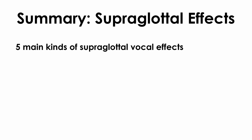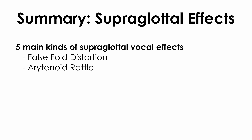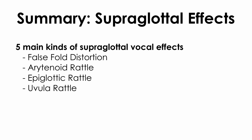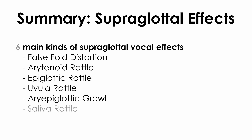Now let's summarize what we've talked about so far. We have five main kinds of supraglottal vocal effects — kinds of tissues above the vocal folds that we can vibrate: false fold distortion, arytenoid rattle, epiglottic rattle, uvula rattle, and ary-epiglottic growl. Theoretically you could also add saliva rattle to the list, because with a bit of luck an extra production of spit could resemble the sound of an arytenoid rattle quite well, but as this one isn't reliably accessible I'm not going to include it.